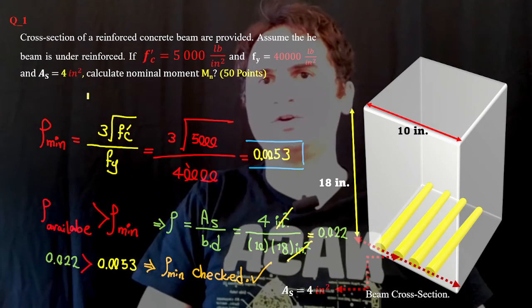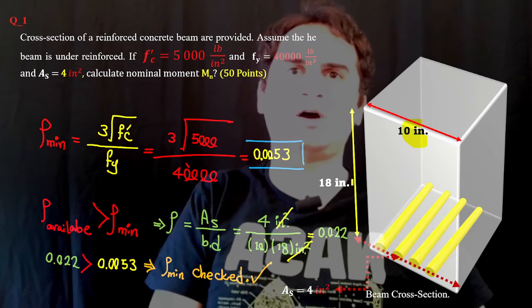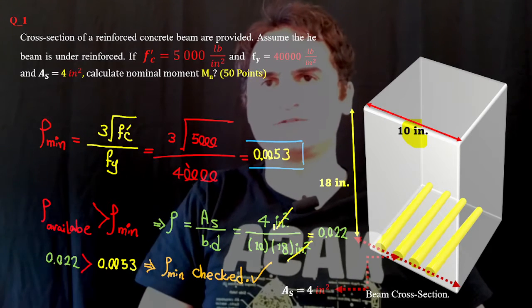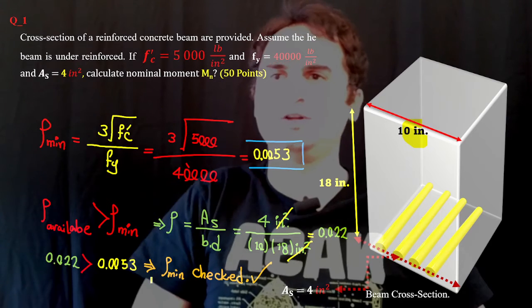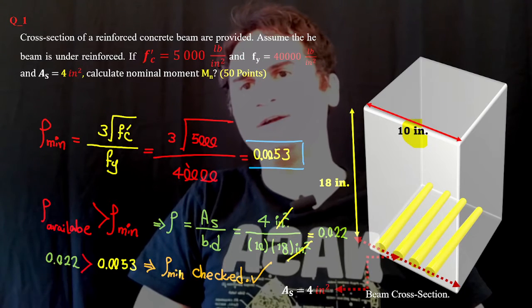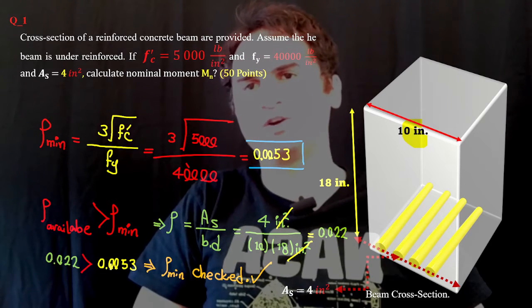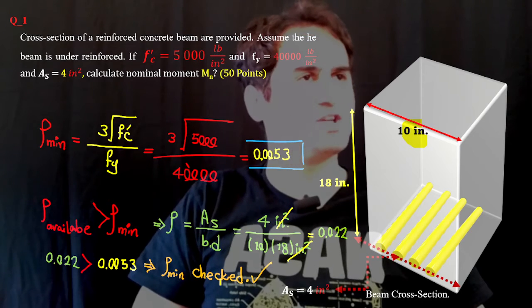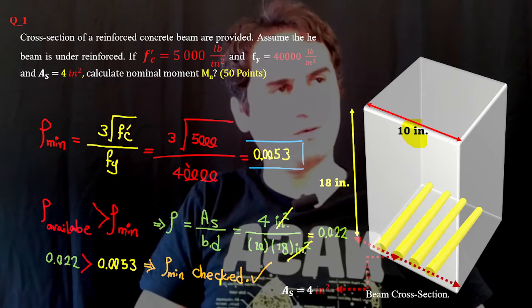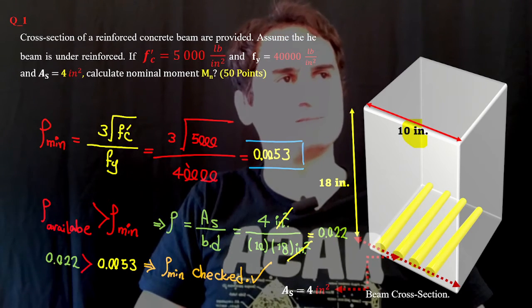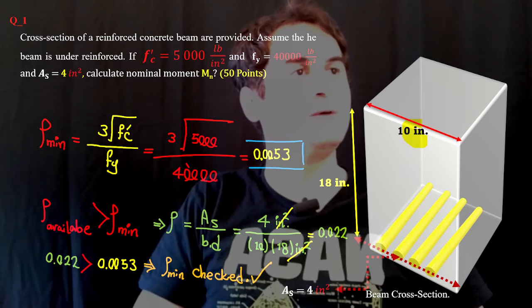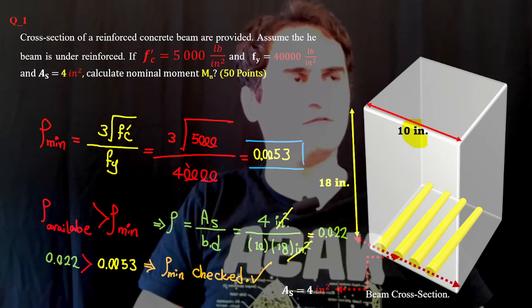Available rho is A_s over area, which is 4 square inches over b times d, giving us 0.022. That should be higher than rho minimum based on ACI code, and our first check shows the problem is meeting the minimum requirement for density.